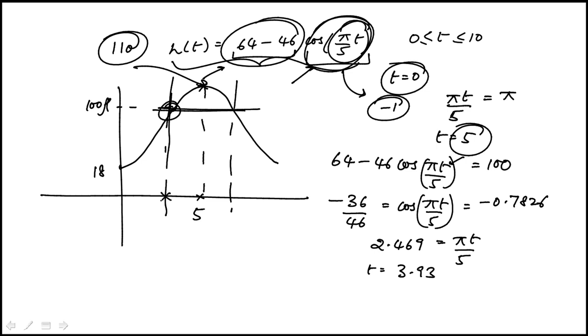So this point is 3.93. Now this function is symmetric, which means that this distance between the midpoint and the point at which it reaches the height of 100 feet is 1.07. That's the difference between 5 and that. It's going to happen the same distance on the other side, another 1.07, where it's going down the height.